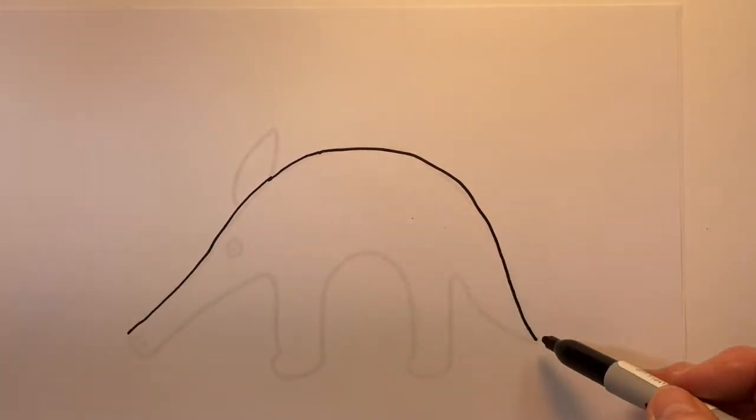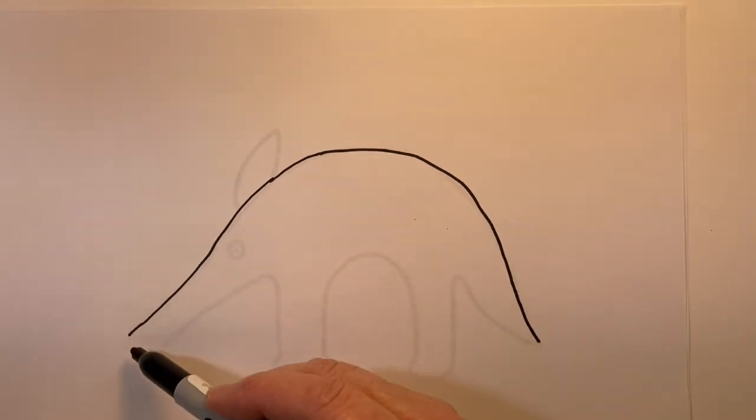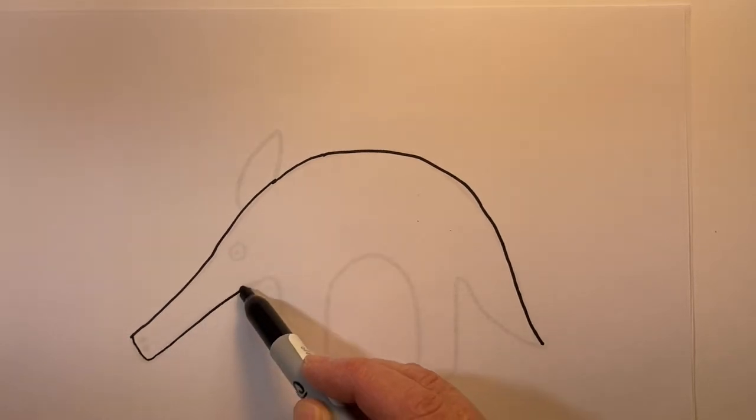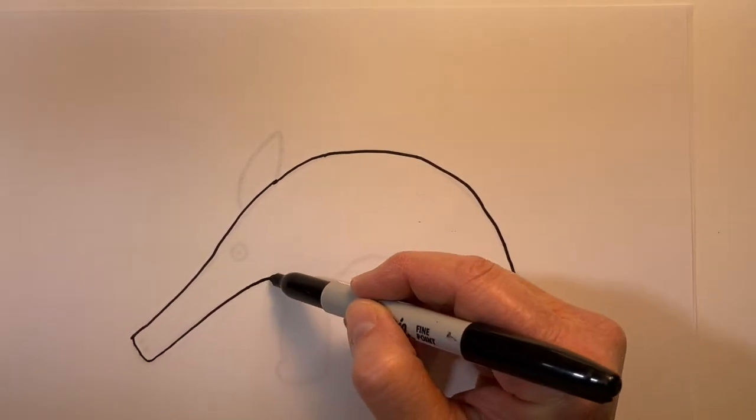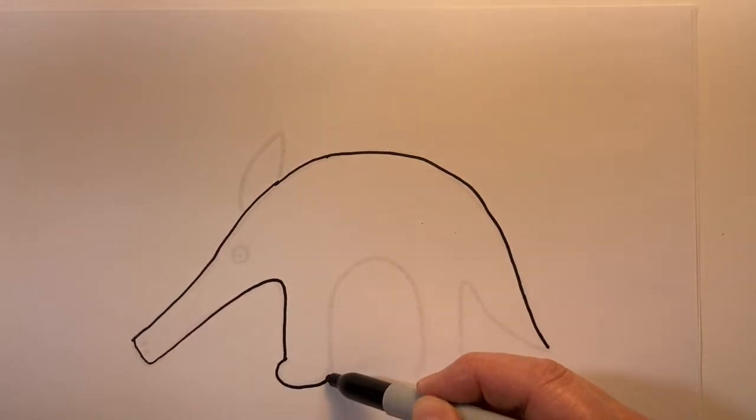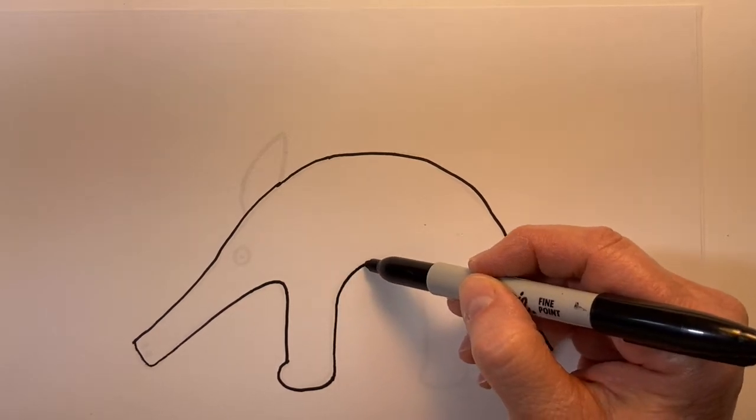There's our arch and then it's kind of flattening out here to create, I guess you would call it the snout of the Anteater. And just going to draw some very simple legs, vertical line, turning into an arch.